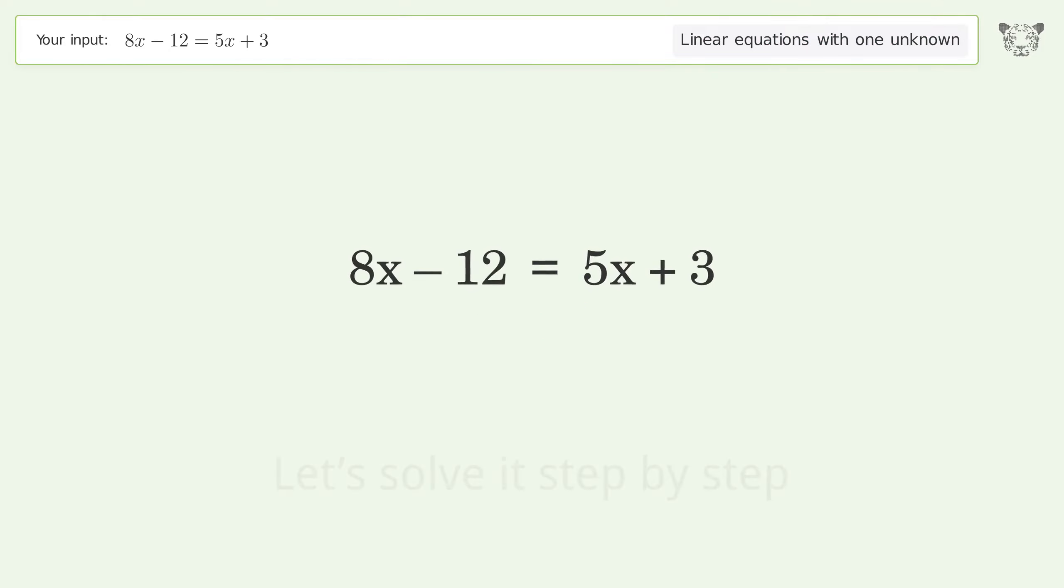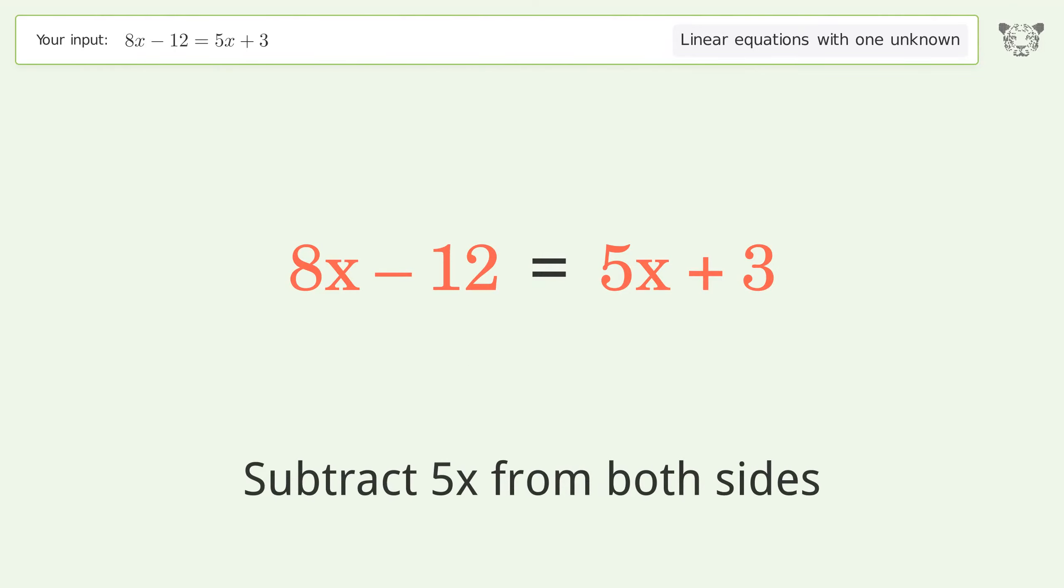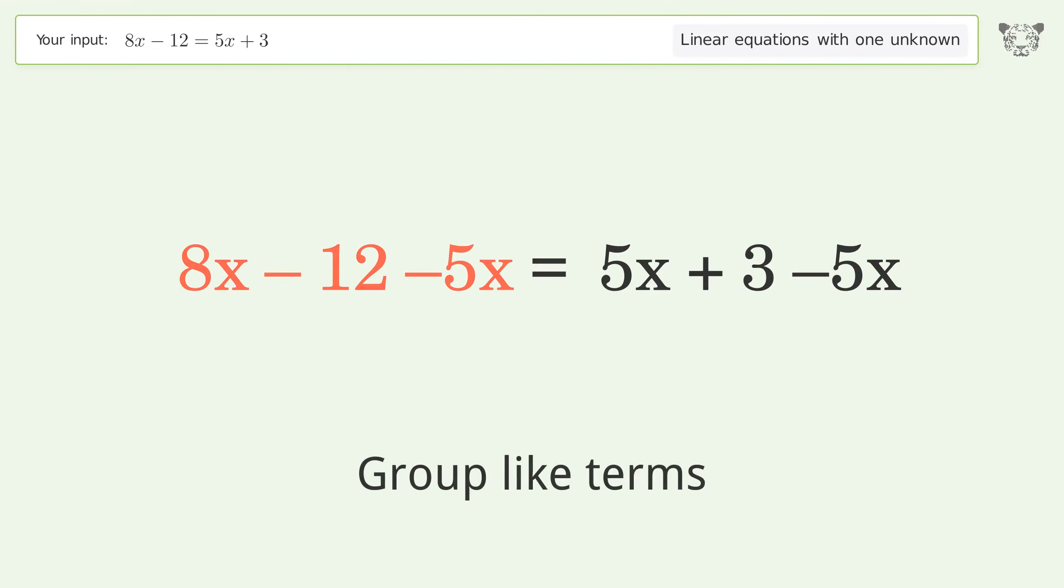Let's solve it step by step. Group all x terms on the left side of the equation. Subtract 5x from both sides. Group like terms.